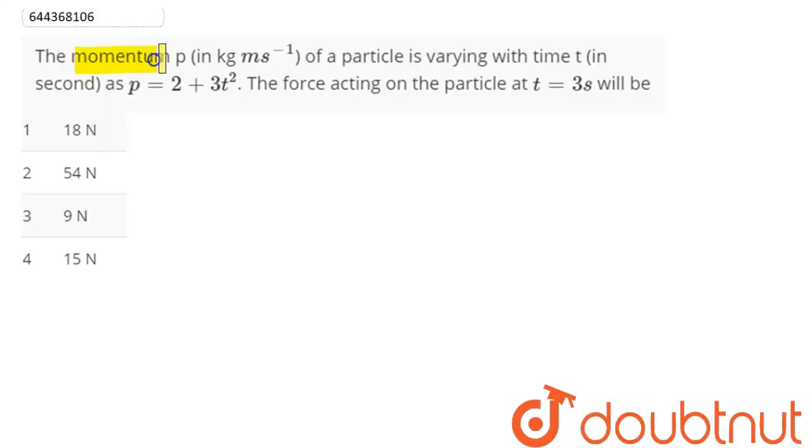Question is, the momentum p in kgm per second of a particle is varying with time t in second as p equal to 2 plus 3t square. The force acting on the particle at t equal to 3 second is.